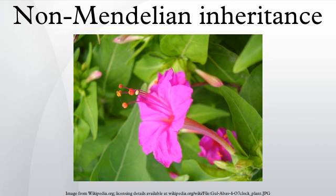Both chloroplasts and mitochondria are present in the cytoplasm of maternal gametes only; paternal gametes do not have cytoplasmic mitochondria. Thus, the phenotype of traits linked to genes found in either chloroplasts or mitochondria is determined exclusively by the maternal parent. In humans, mitochondrial diseases are a class of diseases, many of which affect the muscles and the eye.